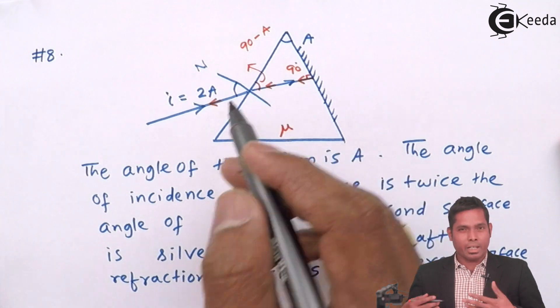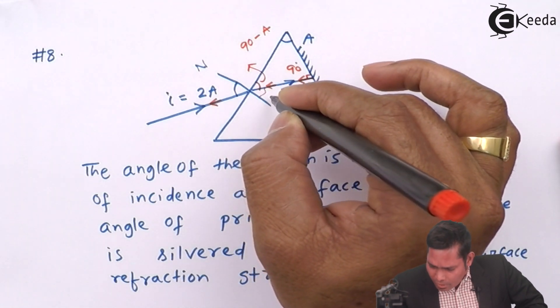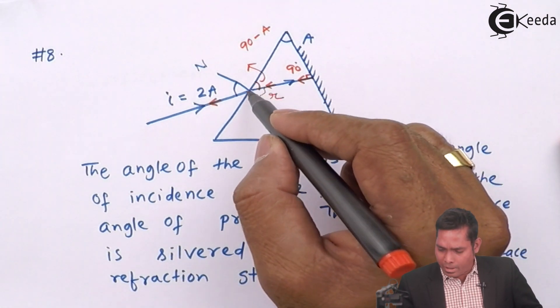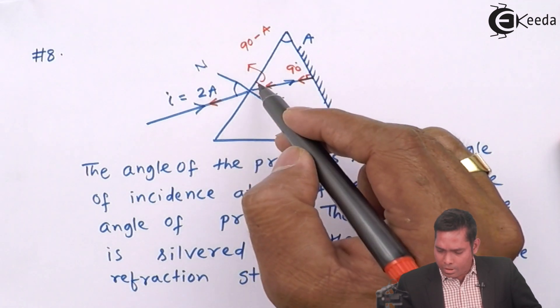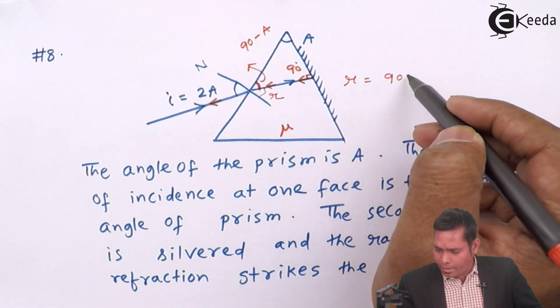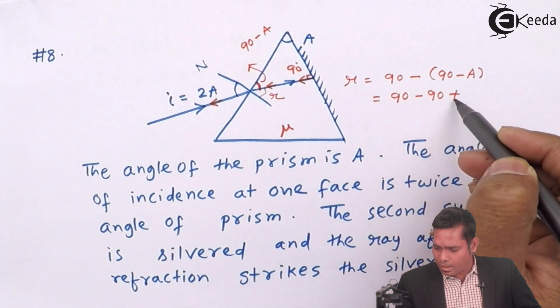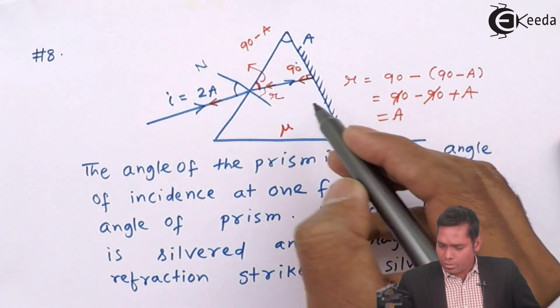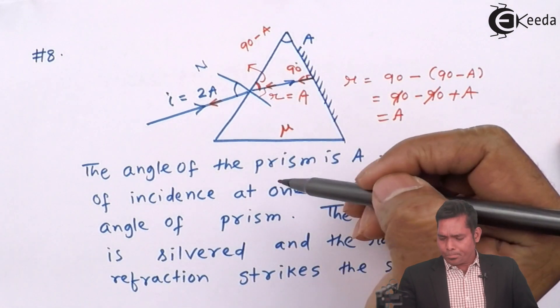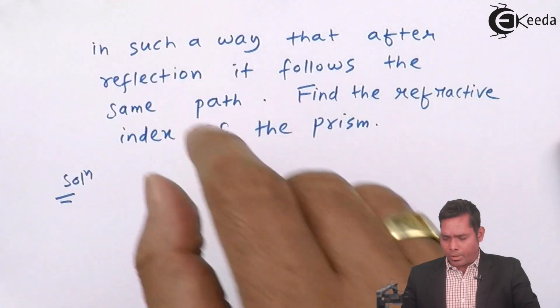Now, what is the angle of refraction? Because to find the mu, you have to use Snell's law. Then what is this angle? This angle is called angle of refraction. And that angle of refraction can be found by 90 minus this value. Because this angle is 90 minus A, this angle r would be 90 minus (90 minus A). This comes out to be 90 minus 90 plus A. So A is the angle. This angle of refraction is the same as the angle of the prism.